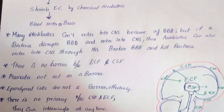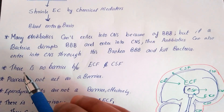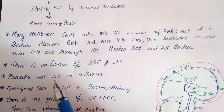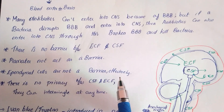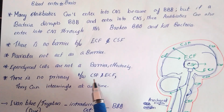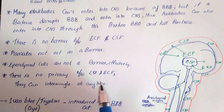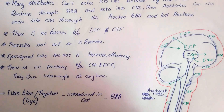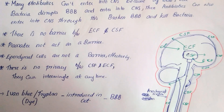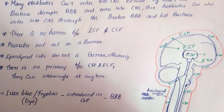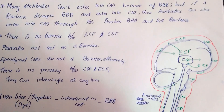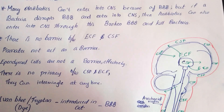In summary: there is no effective barrier between cerebrospinal fluid and the pia mater; ependymal cells are not an effective barrier; and cerebrospinal fluid and extracellular fluid can intermingle freely at any time. The dye used by scientists to discover the mechanism of the blood-brain barrier was Evans blue, also known as trypan blue. This dye conjugates with protein and therefore cannot enter the central nervous system through the barrier.